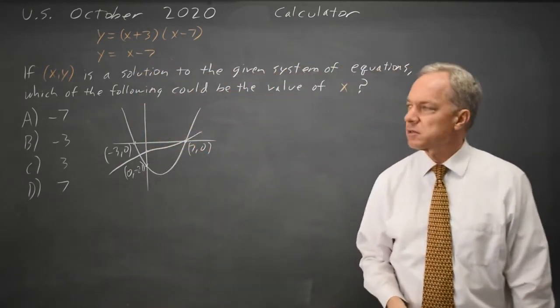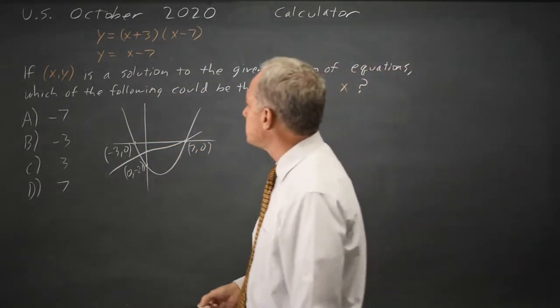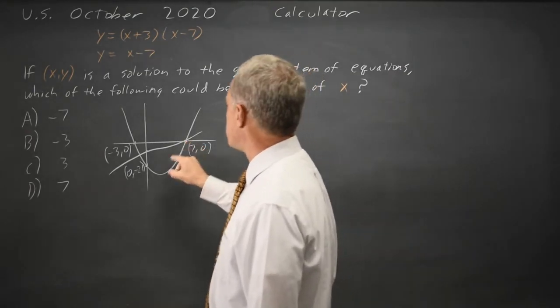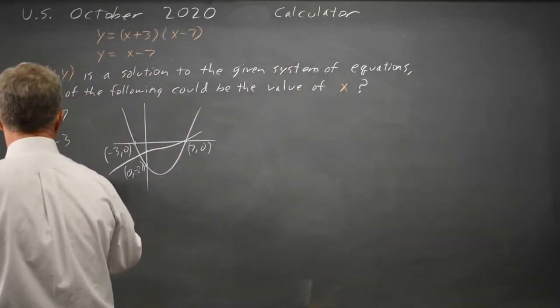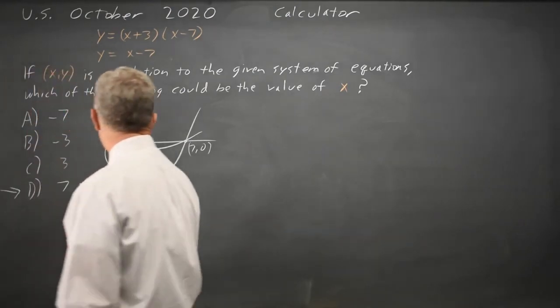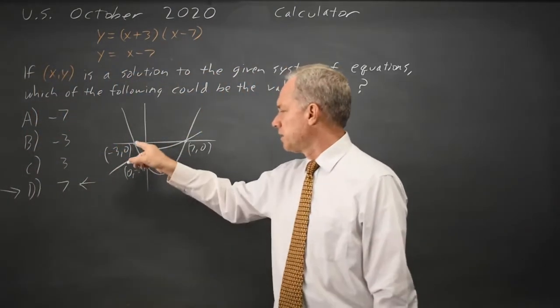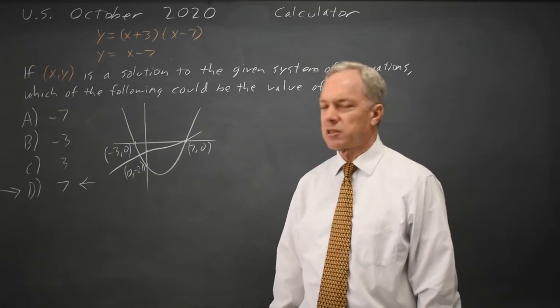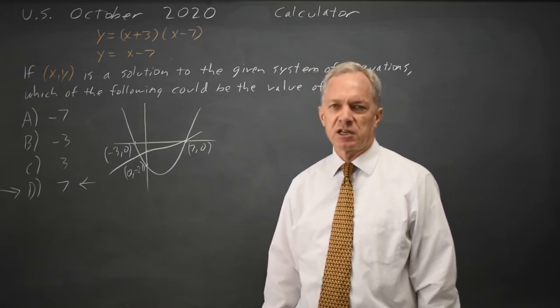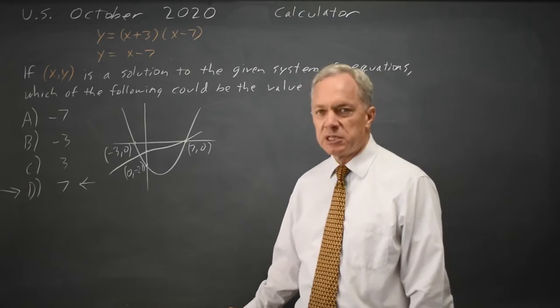That gives us one point of intersection already just graphing it by hand. The x-value would be x equals 7 at one point of intersection, and looks like negative something between 0 and 3, but not negative 3, and certainly not negative 7 for the other, so the correct answer would be D.